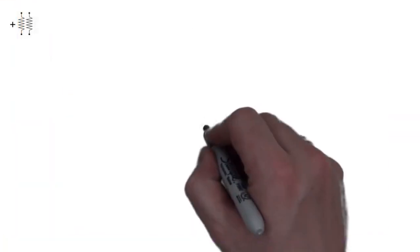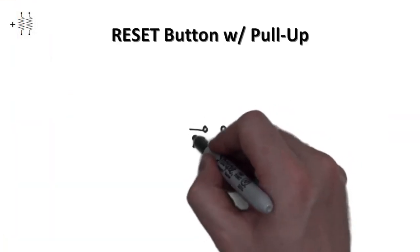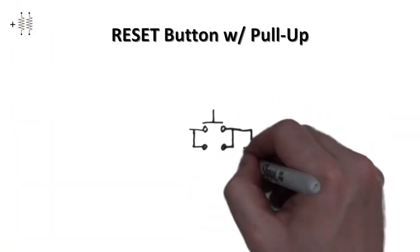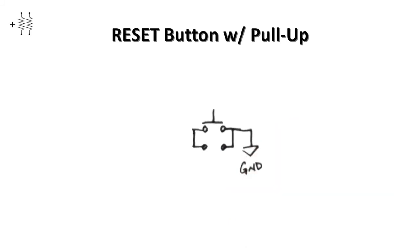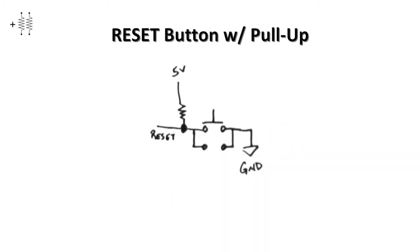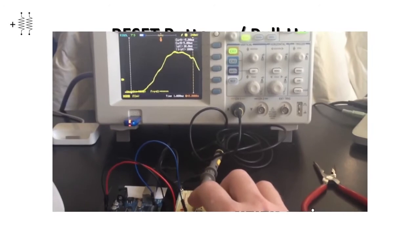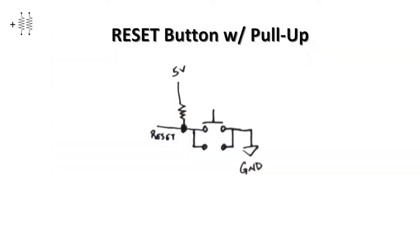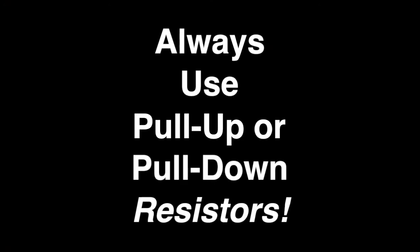Moving on, we're going to add a reset button to our circuit. Push buttons almost always have four legs, even though they really only have two contacts, and so that's why they're drawn with the four dots. Now one thing that's missing from the schematic is a pull-up resistor, which keeps the pin from floating when it's not being pressed down. This oscilloscope is showing without a pull-up resistor that noise is getting into our circuit.